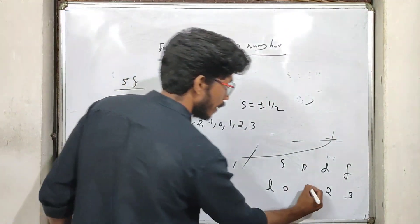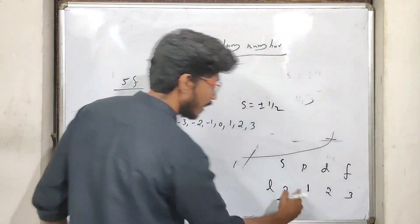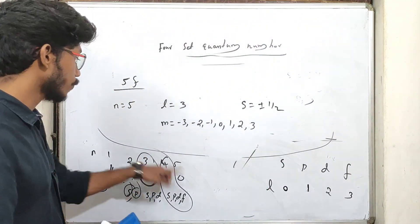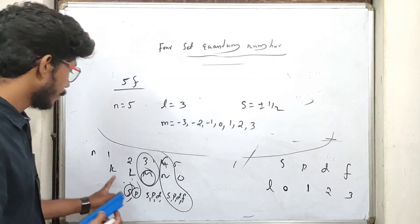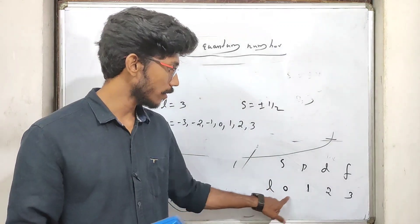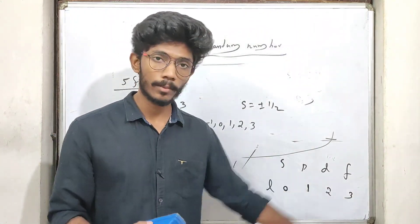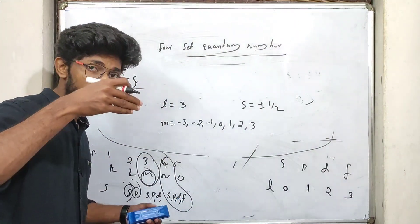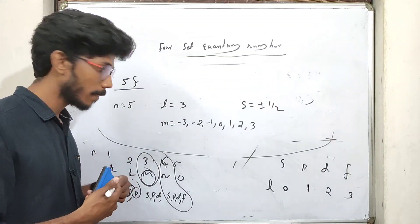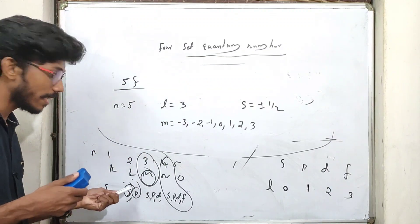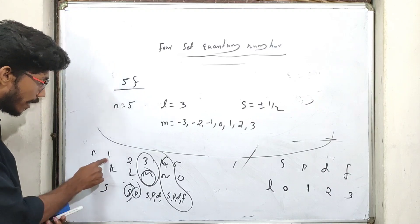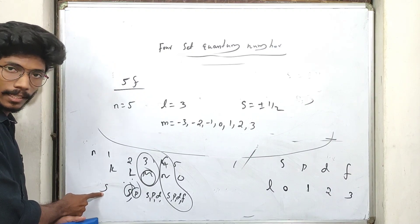The L value is always equal to n minus 1 at maximum. If you start with n equals 1, then L equals 0 for S sub-shell (1 minus 1 equals 0).